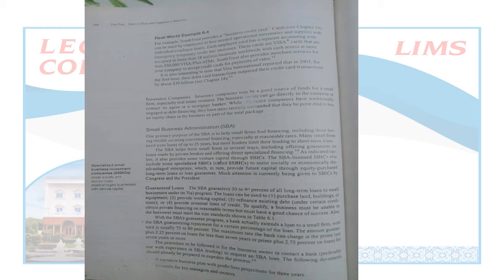Then come guaranteed loans. The SBA guarantees 30 to 40 percent of long-term loans to small businesses under its 7(a) program. The loans can be used to: purchase land, buildings, or equipment; provide working capital; and refinance existing debt — meaning you can borrow from SBA to repay a previous loan. The fourth use is to provide a seasonal line of credit.